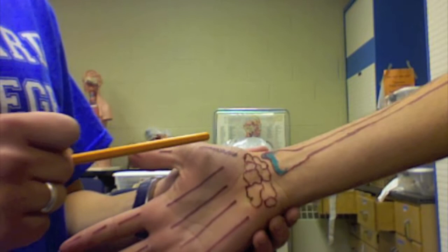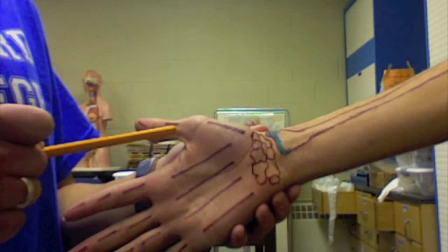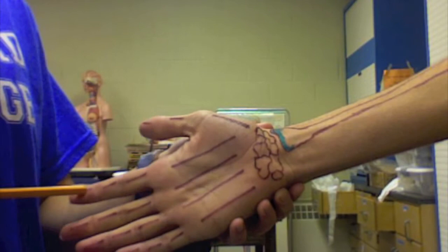First, second, third, fourth, fifth metacarpals. Proximal, distal, proximal, middle, distal phalanges. Ischial tuberosity.